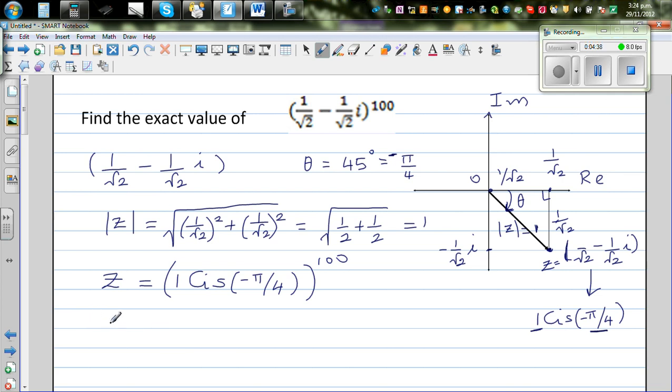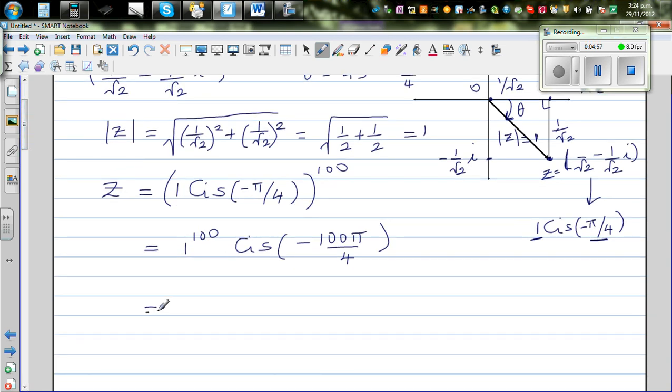So using De Moivre's theorem, I can say this is the same as 1 to the power 100 cis minus 100 pi over 4. So this is 1 to the power 100, which is 1, cis minus 25 pi.